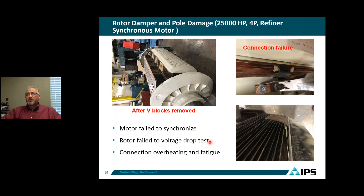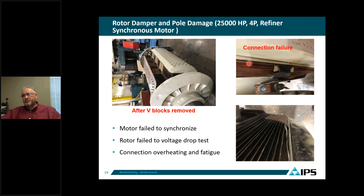A case study: a 25,000 HP refiner synchronous motor failed to synchronize in the field. We performed a voltage drop test, which it failed. After pulling the rotor in the shop, we found that interconnections between the H1-style field coils had failed due to overheating and fatigue — the current path between poles was open-circuited. That is why the motor failed to synchronize and failed the voltage drop test. The root cause was thermal fatigue from mechanical loading and internal thermal expansion of the coil connections over time.